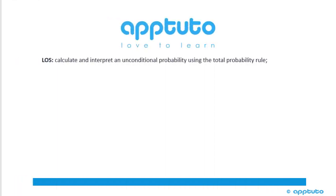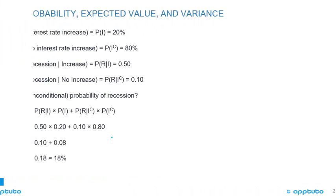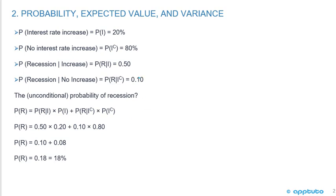This LOS is calculate and interpret an unconditional probability using the total probability rule. For this LOS there's only one slide and we're going to just work through a little bit of an example.